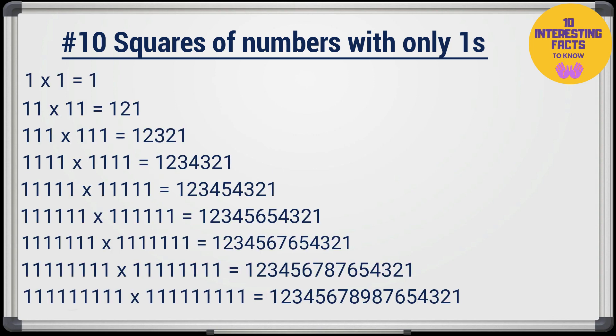You must have noticed the pattern by now. So, if there are only 2 ones, we are writing the numbers up to 2 and then back to 1. And for 3 ones, we go up to 3 and then back and so on. This pattern will work up to numbers with 9 ones. And that's a big number.